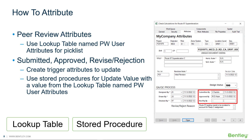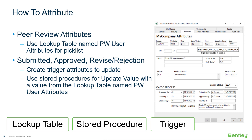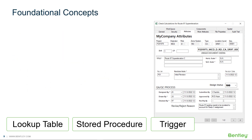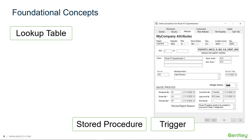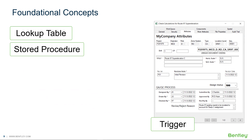We will have the attributes update only when the corresponding trigger value changes. When we configure the rules engine in the next lessons, we will set the trigger values when appropriate to force updates on the corresponding attributes. Before diving into the details of each QA/QC attribute, let's review the foundational concepts that we will use, including lookup tables in the context of user information, stored procedures, and triggers.